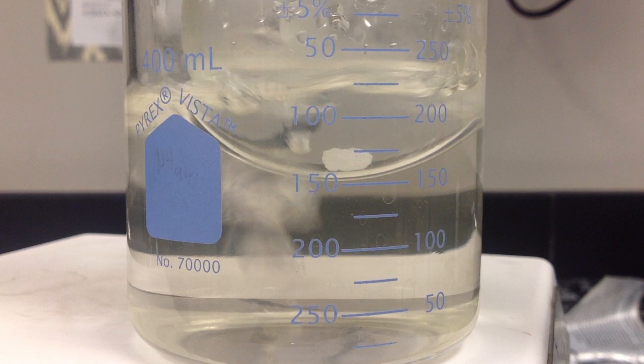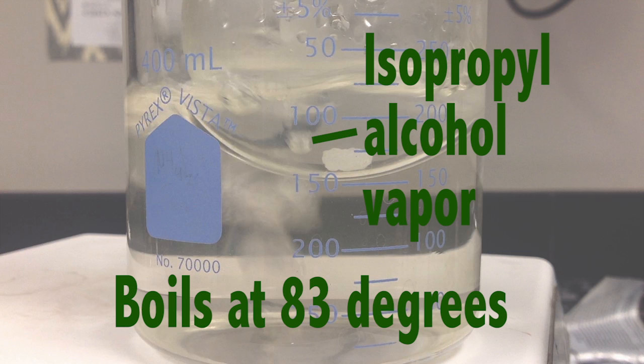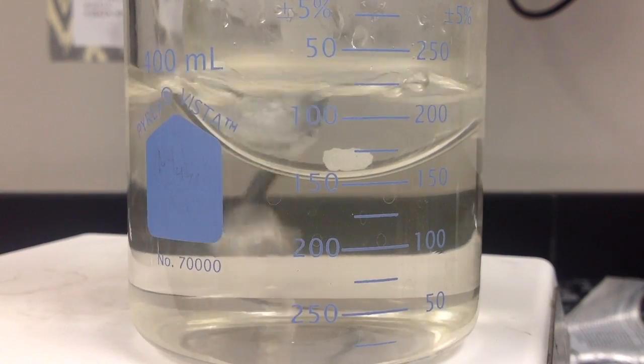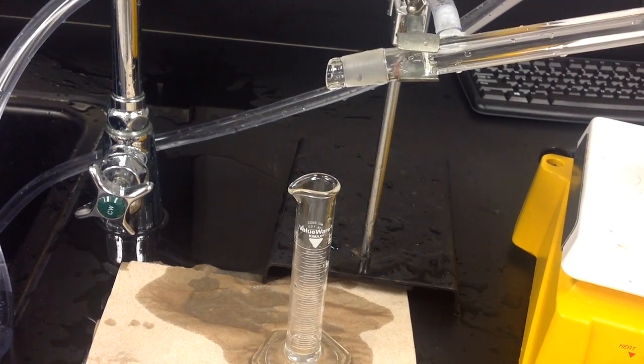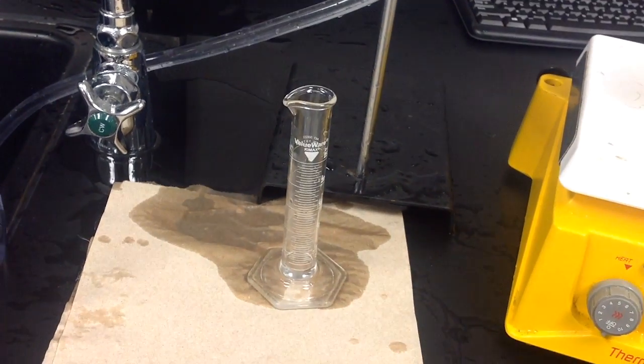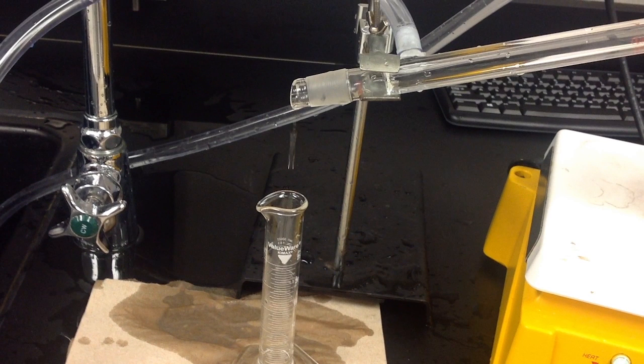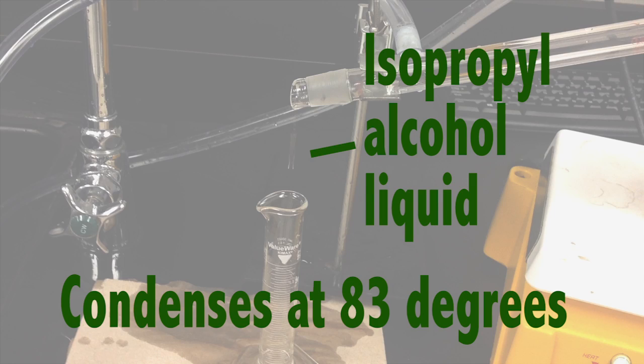We know these bubbles are alcohol vapors because alcohol has a lower boiling point than water. Also, at the end of the condenser, drops of liquid start to run out. This liquid is the alcohol that boiled in the flask, only now it has cooled back down below 83 degrees and changed back into a liquid.